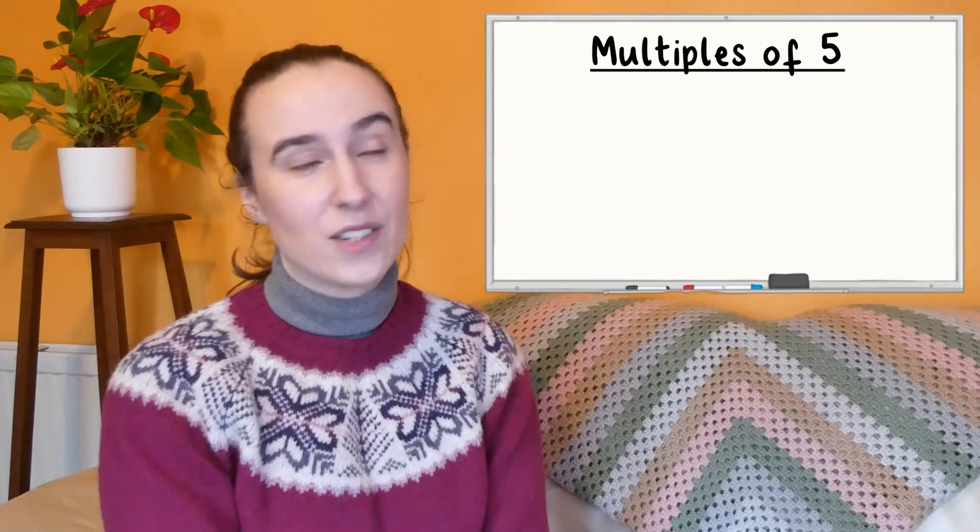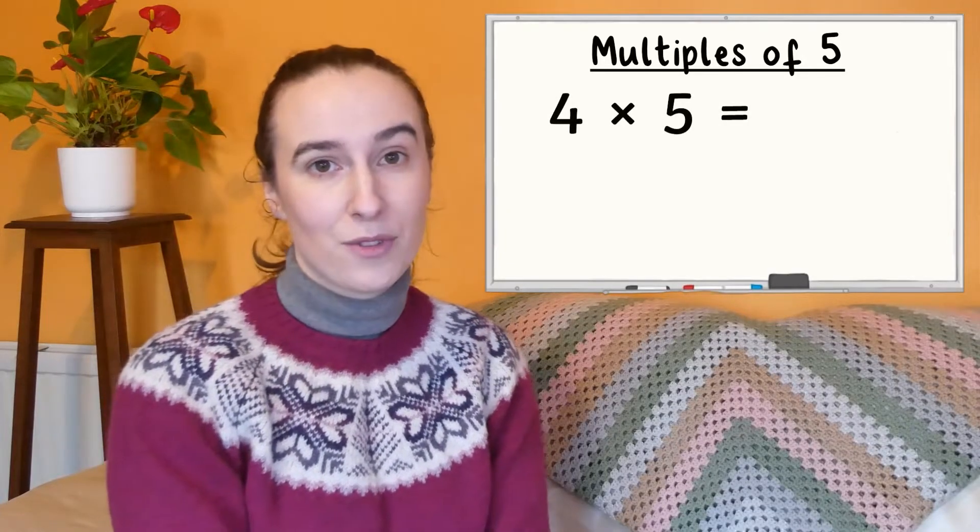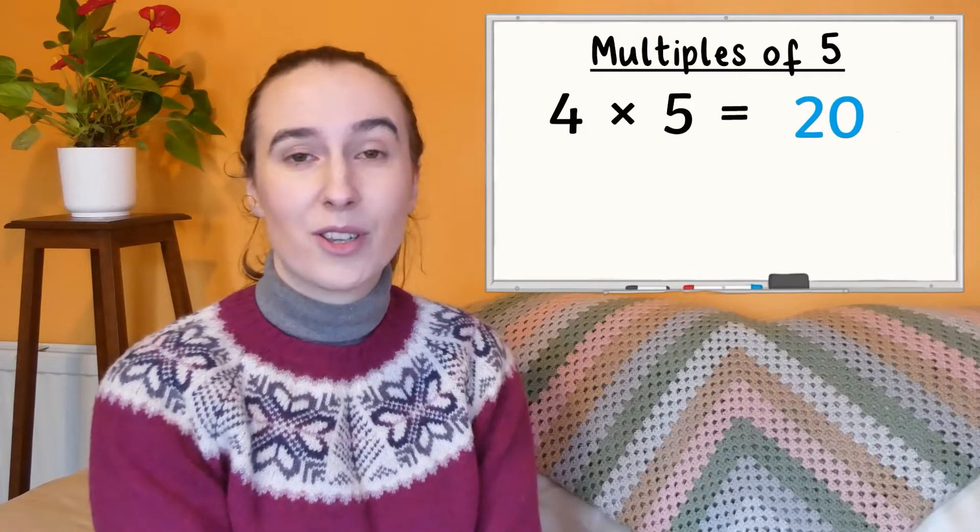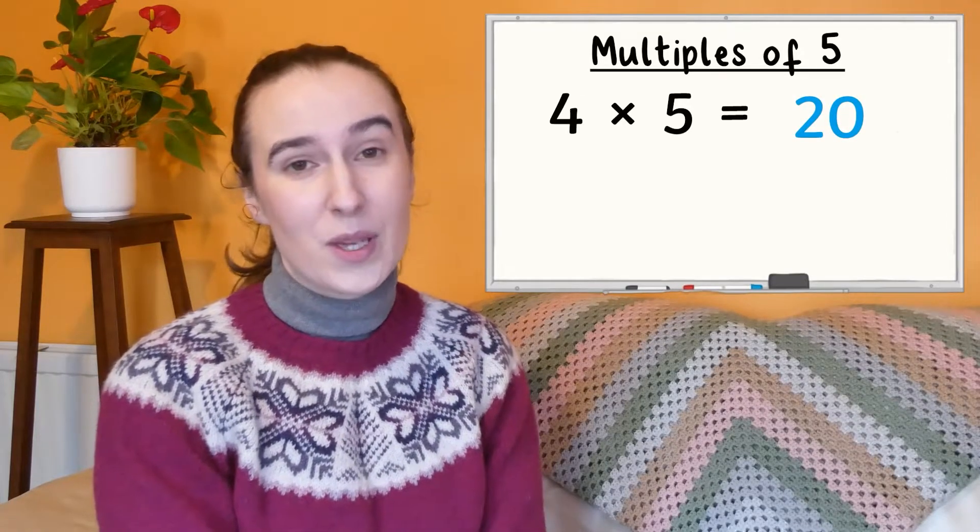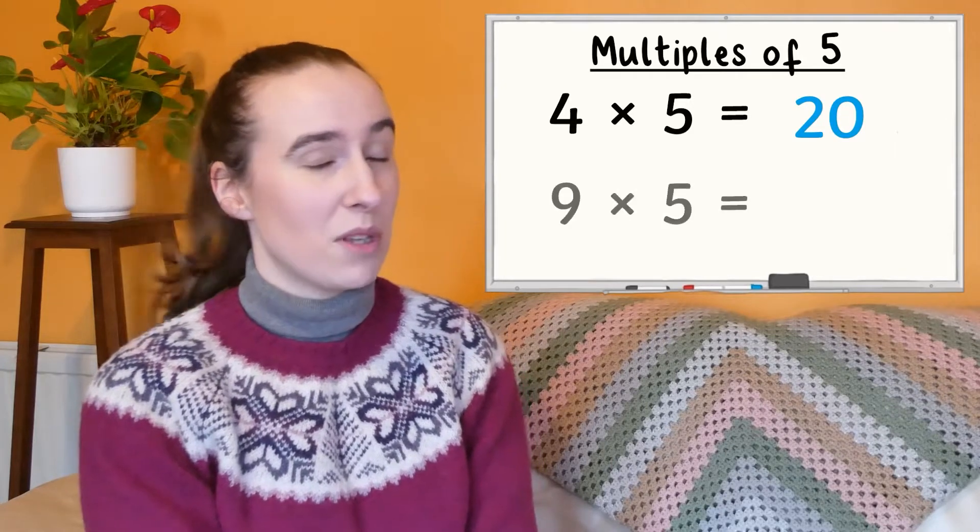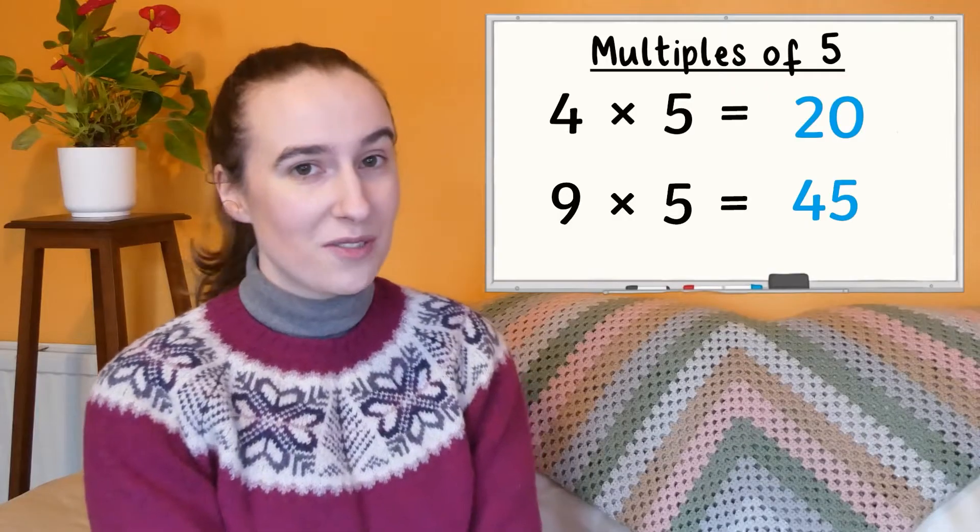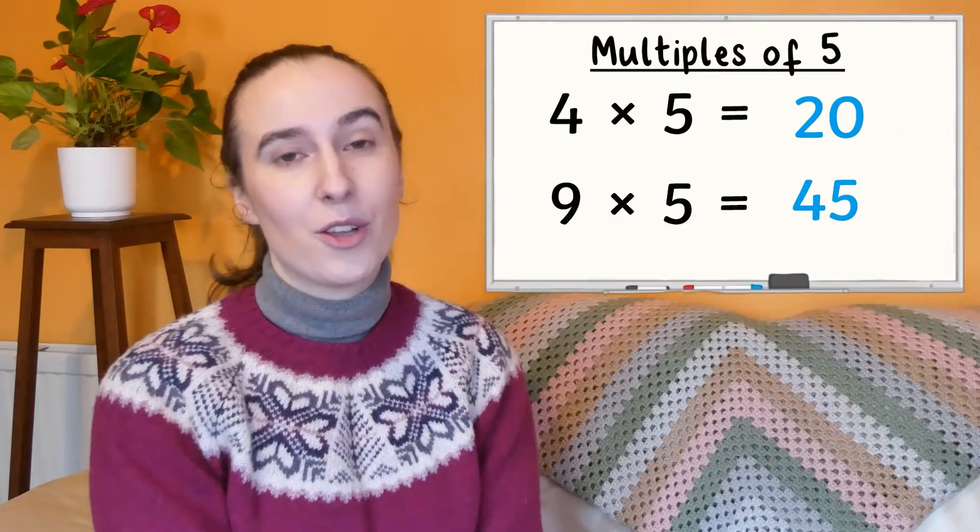Let's look at 4 multiplied by 5. 4 multiplied by 5 is 20, so 20 is a multiple of 5. Equally, we could do the calculation 9 multiplied by 5, giving us 45. So 45 is also a multiple of 5.